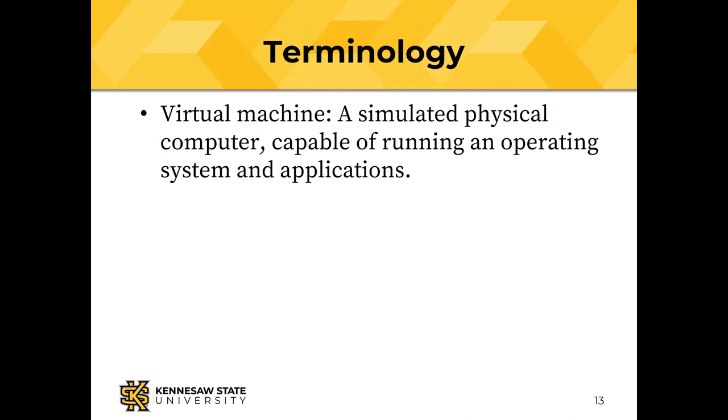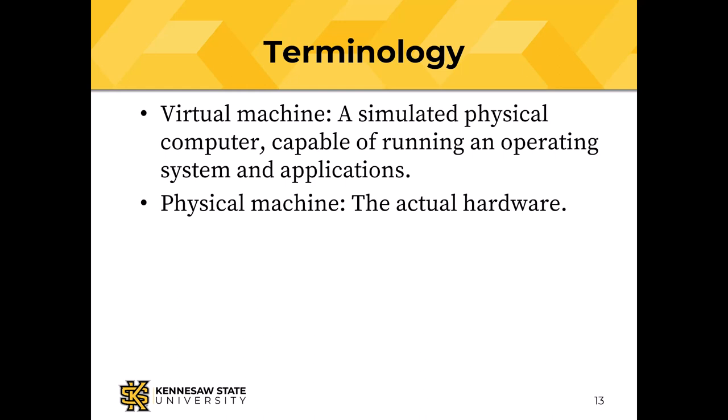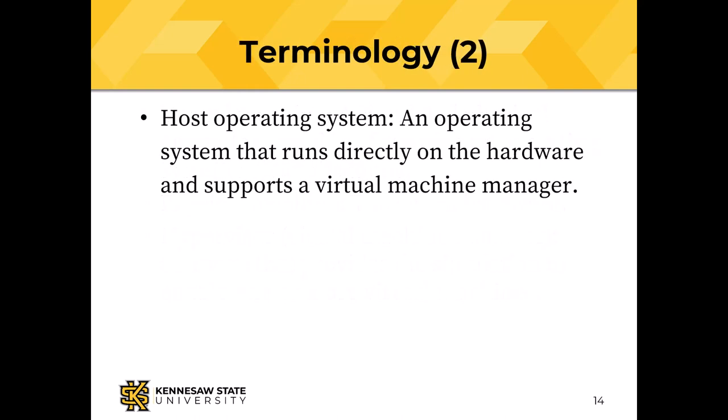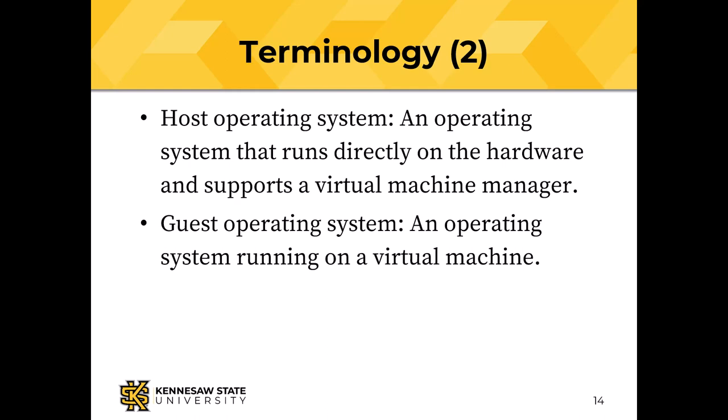Some terminology: a virtual machine is a simulated physical computer that can run an operating system, on which we can run applications. A physical machine is the actual hardware. A hypervisor, or virtual machine manager, is the software that provides the simulation or instantiation of two or more virtual machines — a weird word that is the extension of the old 'supervisor' as a name for the operating system. A host operating system is one that runs directly on the hardware, where the hypervisor would be an application running on top of it. A guest operating system is one that's running inside a virtual machine.